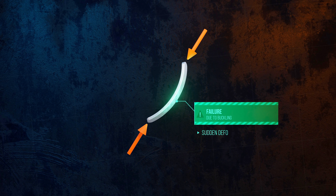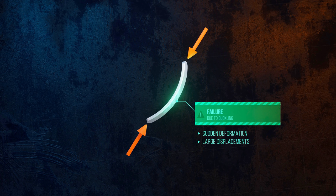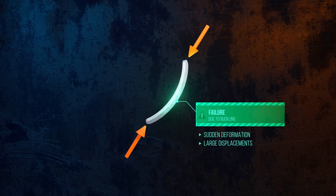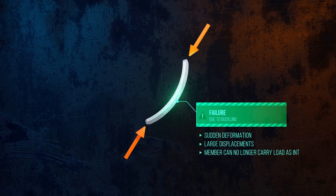An initially straight member will buckle suddenly, producing large displacements. This doesn't always result in yielding or fracture of the material, but buckling is still considered to be a failure mode, since the buckled structure can no longer support a load in the way it was designed to.